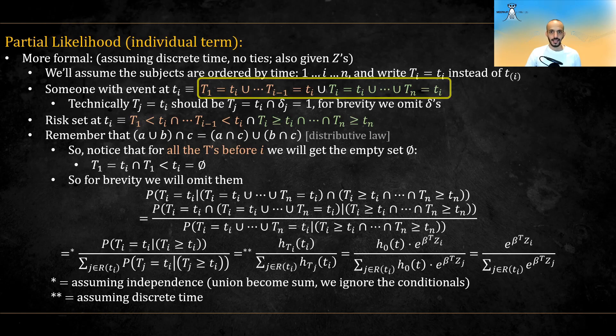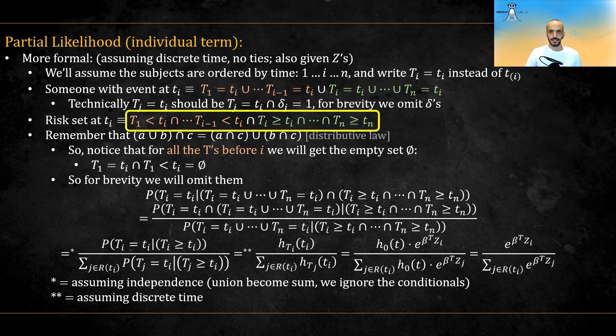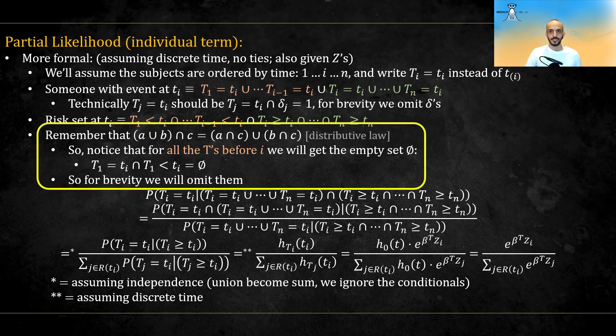Technically, we should also write the deltas, but for brevity, let's omit them. The risk set at ti can be written like this. Now, remembering the distribution law, we notice that all the t's before i will become the empty set, so for brevity, we will also omit them.